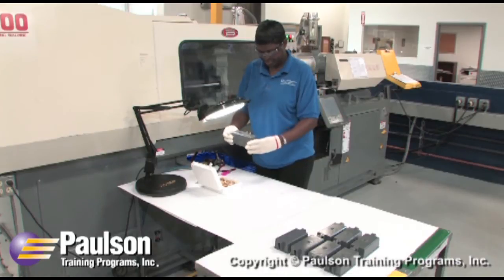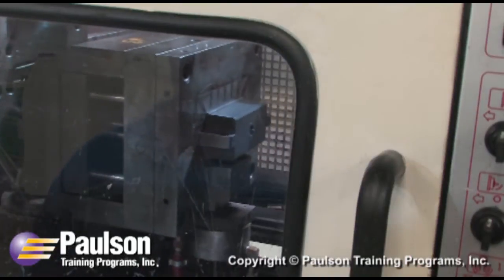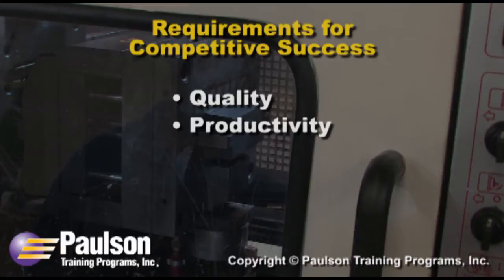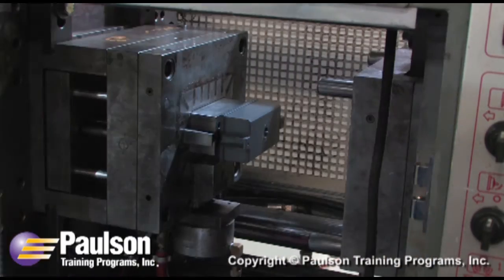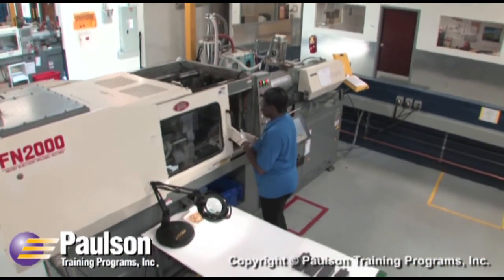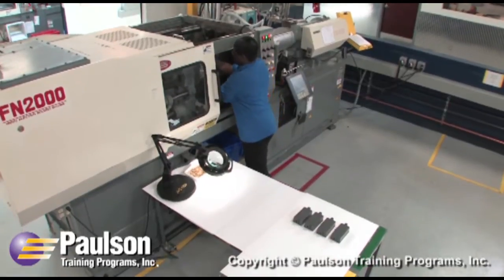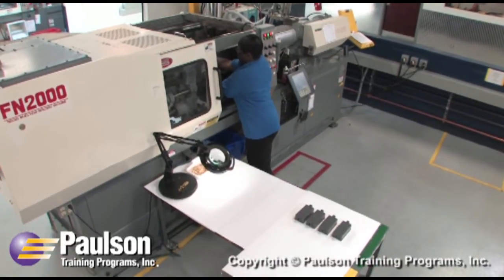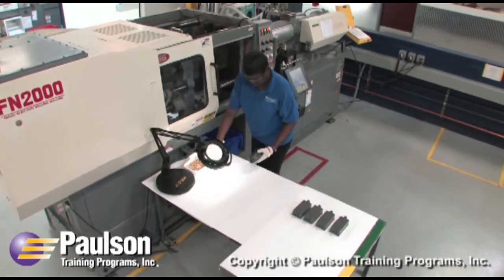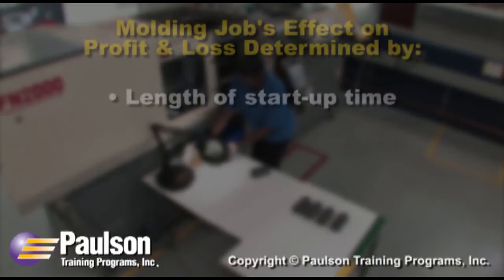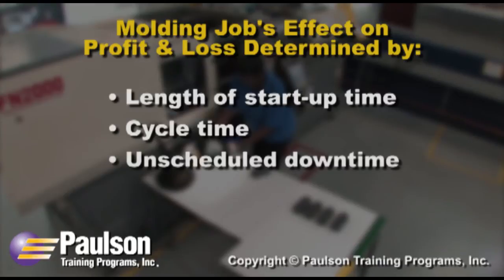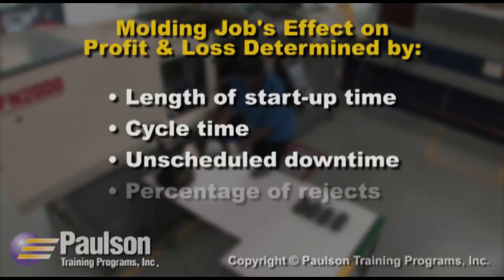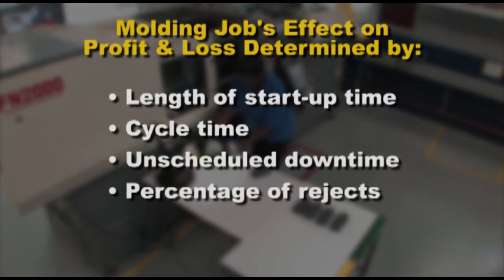There are two requirements for competitive success: quality and productivity, and they are closely related. Company profit is gained or lost at each molding machine on the production floor. The gains or losses are determined by four variables that determine production efficiency: the length of the startup time, the cycle time, the amount of unscheduled downtime, and the percentage of rejects.